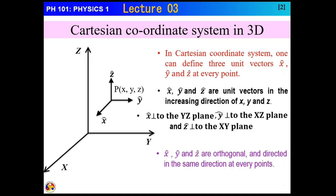Similar to the two-dimension case, here also in 3D these unit vectors are going to be orthogonal and directed in the same direction at every point. These unit vectors are not going to change when we move from one position to another. They also satisfy the condition that the cross product of unit vector x with unit vector y gives unit vector along z direction.